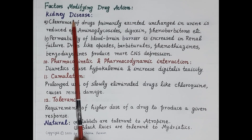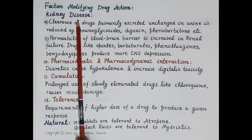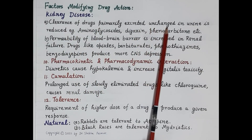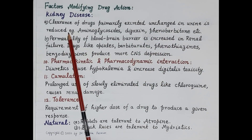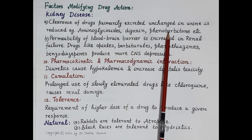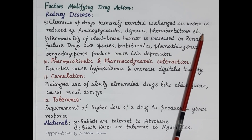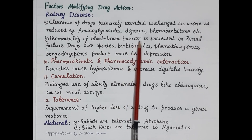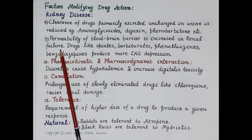Kidney disease reduces kidney function. Since the majority of drugs are excreted in urine by the kidneys, clearance of drugs excreted unchanged in urine is reduced. Kidney disease reduces excretion of drugs like aminoglycosides, digoxin, and phenobarbitone. Additionally, permeability of the blood-brain barrier is increased in renal failure due to accumulation of toxic products like urea, uric acid, and ammonia.